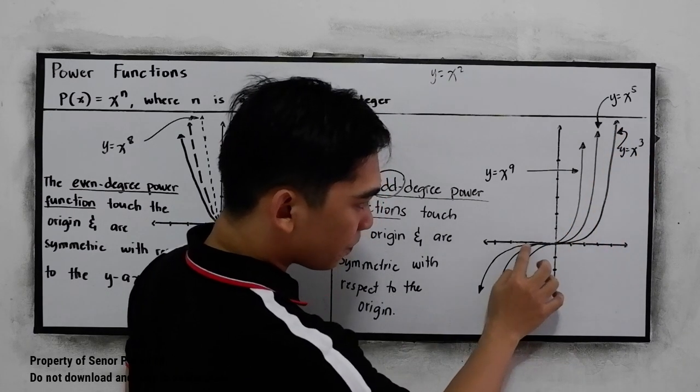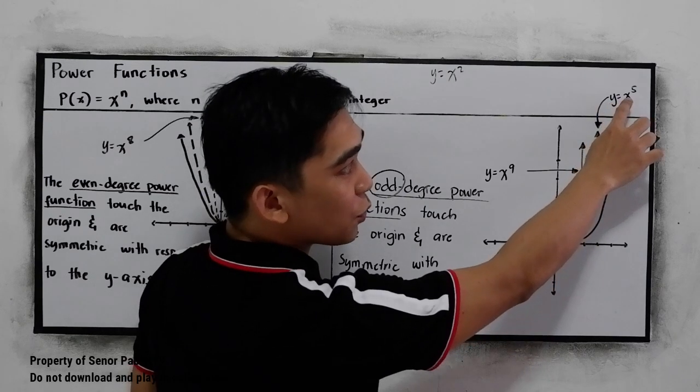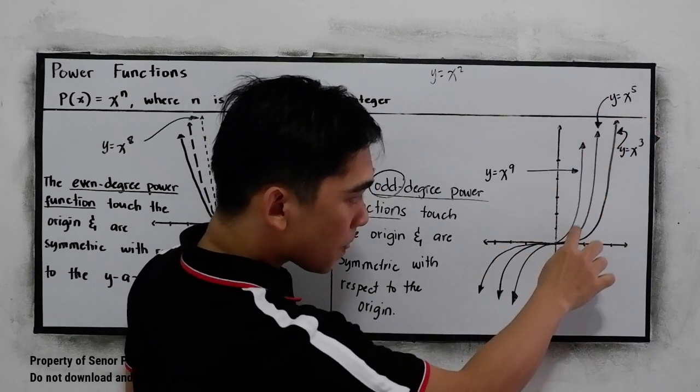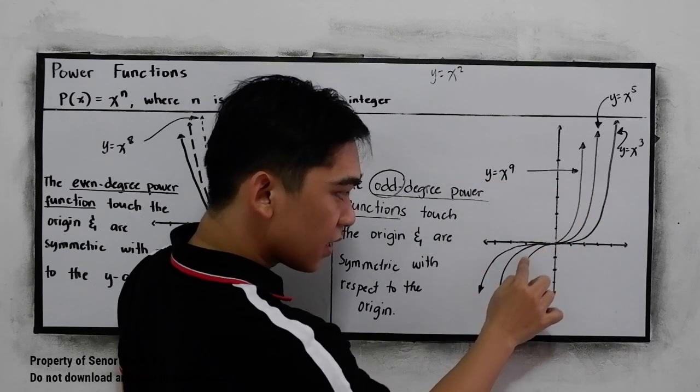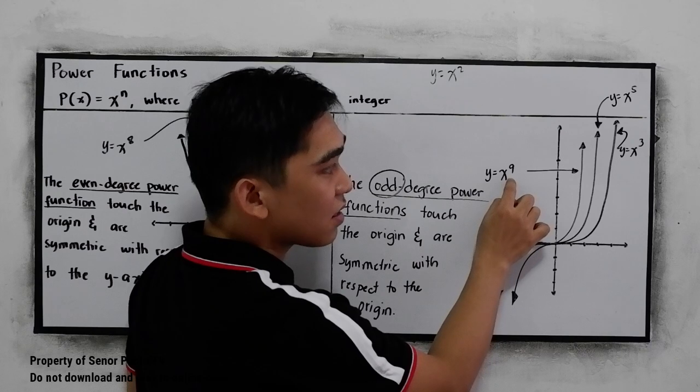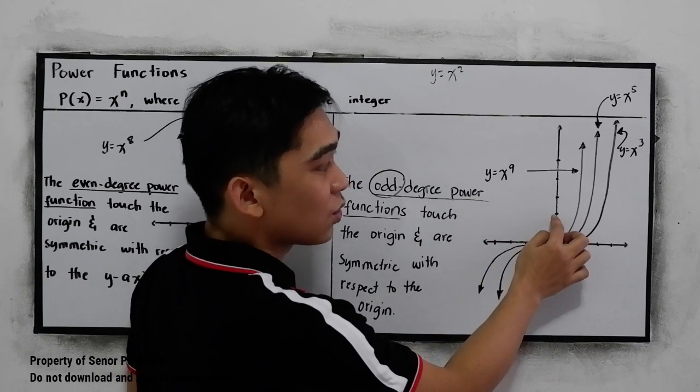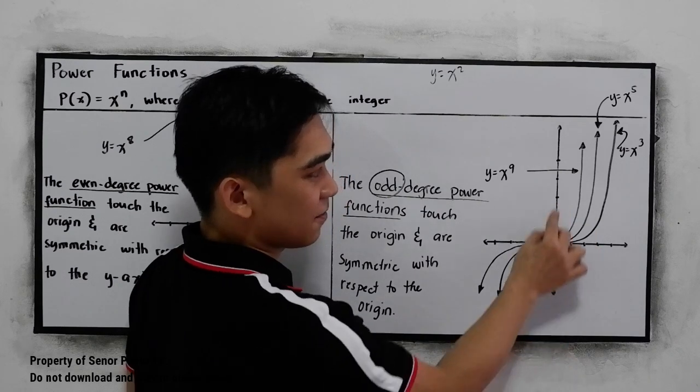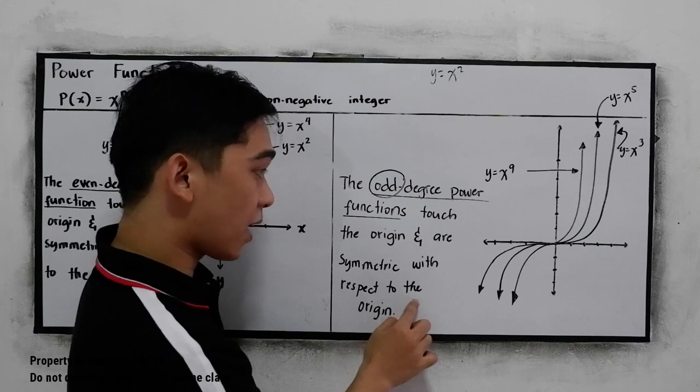y = x^5, and y = x^9. So again, as the value of n increases, it will draw closer to our y-axis. And it is symmetric with respect to the origin.